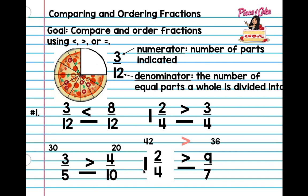So one and two-fourths is greater than nine over seven. If you don't understand how I turned this into an improper fraction, we're going to practice that again. Multiply: six times one is six, plus two is eight. So it's eight over six.